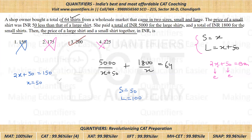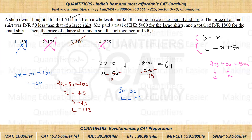So the answer must be option three: 2X plus 50 equals 200, giving X equals 75. Let us verify: small shirt price is 75, large shirt price is 125. 5,000 divided by 125 is 40 large shirts, and 1,800 divided by 75 is 24 small shirts. 40 plus 24 equals 64. Yes, it is satisfying — so option number three is the correct answer.